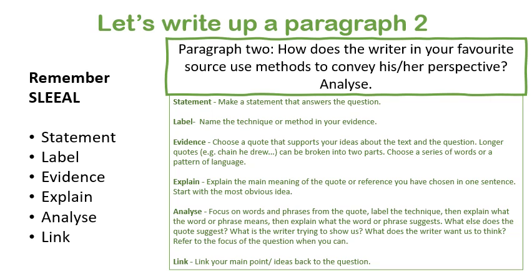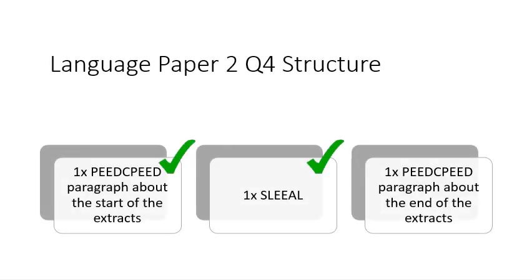Now it's time to write your paragraph two. How does the writer in your favourite source use methods to convey his or her perspective? It's a SLEAL paragraph, so make sure you've got your language-rich quote ready, then write a statement that responds to the task. Label your technique, add your evidence, and explain the meaning of the quote. Start with the easiest ideas first, then analyse in as much detail as you can — think about keywords, phrases, features or techniques you can pick out, what else the quote suggests, what the writer is trying to show, and what the writer wants us to think. When you're done, link your ideas back to your main point. You've now written your first comparative paragraph and your SLEAL language analysis paragraph.